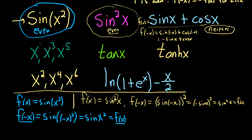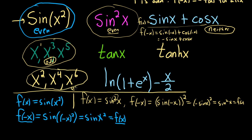Functions with all odd exponents will all be odd, because whenever you plug in negative x into something raised to an odd power, you always get a negative on the outside. Likewise, functions with all even exponents will all be even — when you square negative x, the negative goes away.